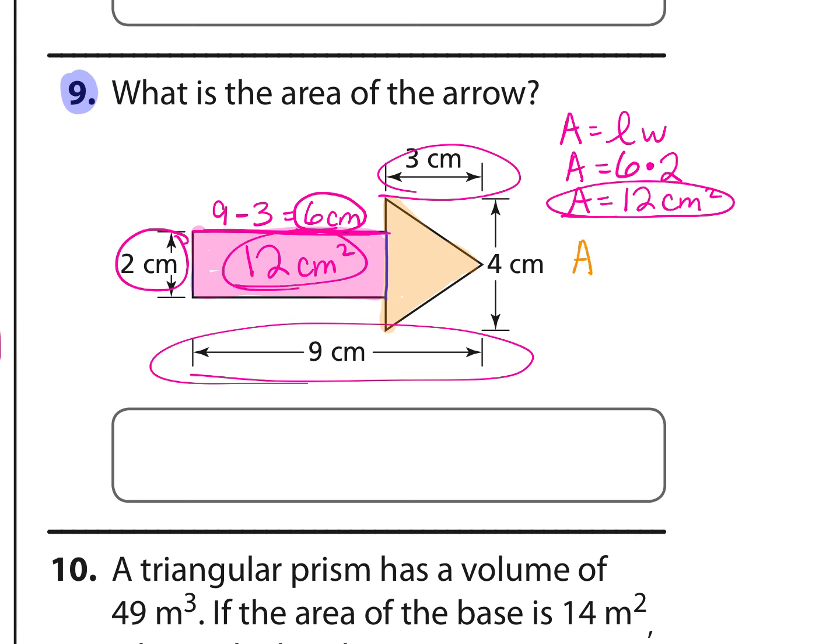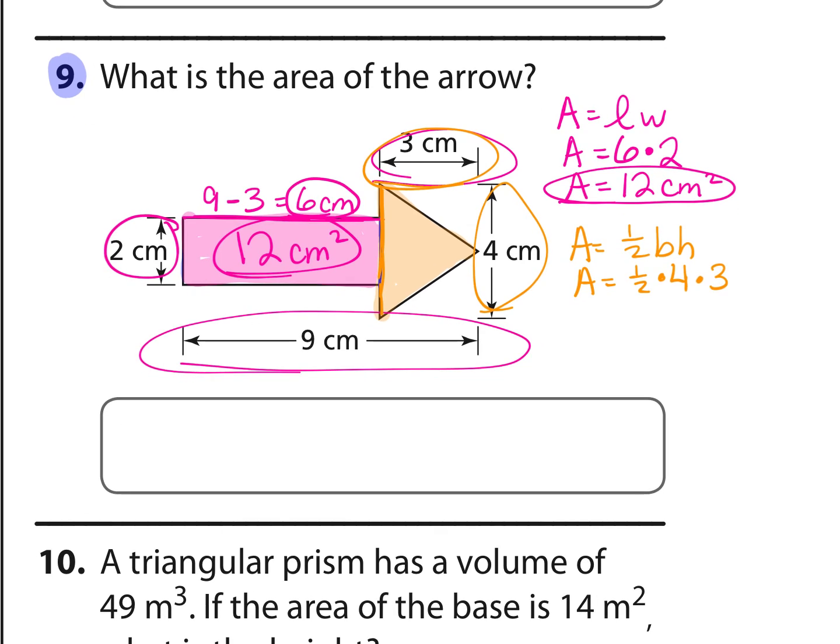For the triangle, area is 1/2 base times height. The base might be this direction of a triangle, 4 times the height would be how tall it is, which is 3. Or you could reverse those and say the base is 3 and the height is 4. It doesn't matter because they meet at 90 degree angles, and half of 4 times 3 is 6 square centimeters. Then we just add them together: 12 plus 6 equals 18 square centimeters total for this area.